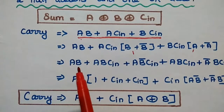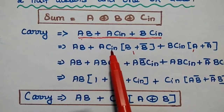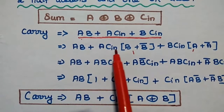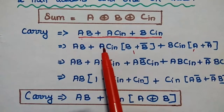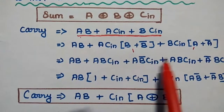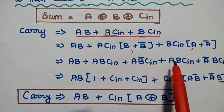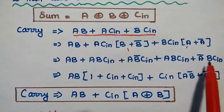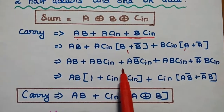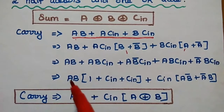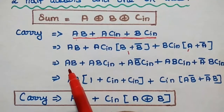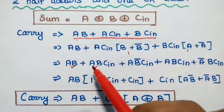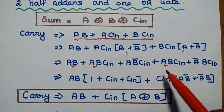In the next step, we multiply inside: we get ABCin + AB̄Cin. Likewise, we get ABCin + ĀBCin. So in the next step, we are going to take the common term out.